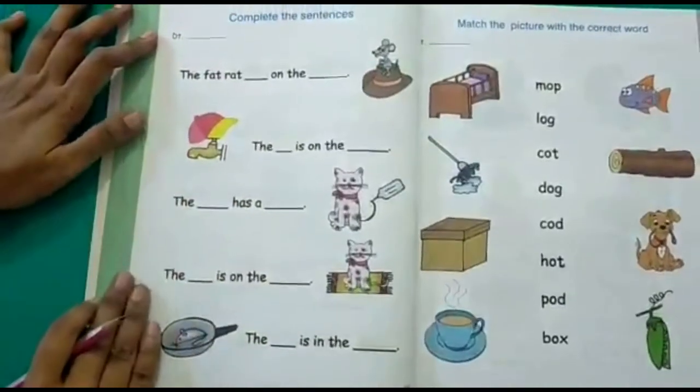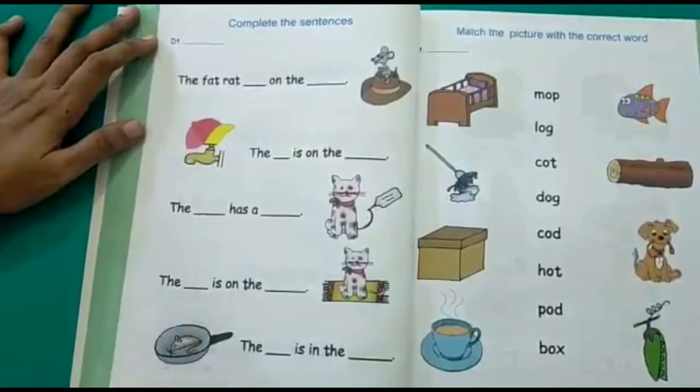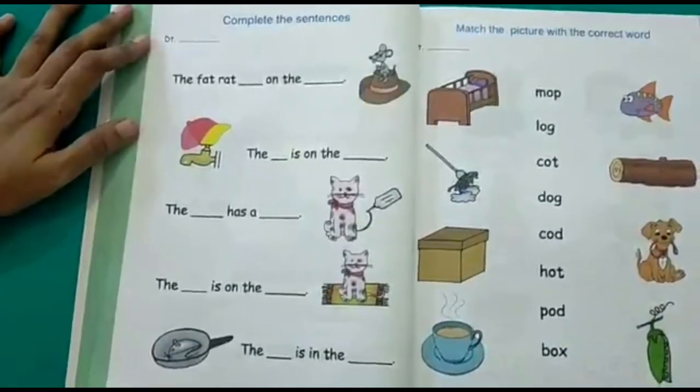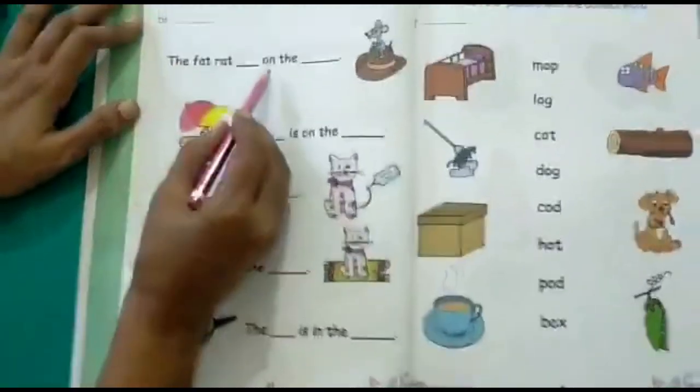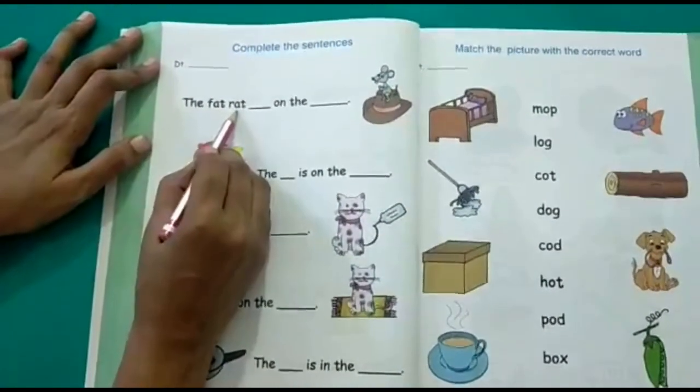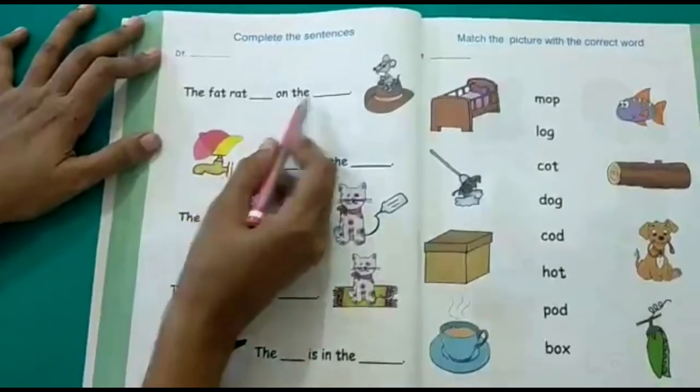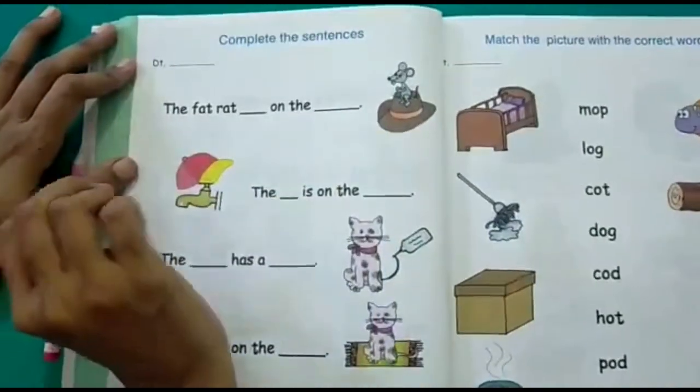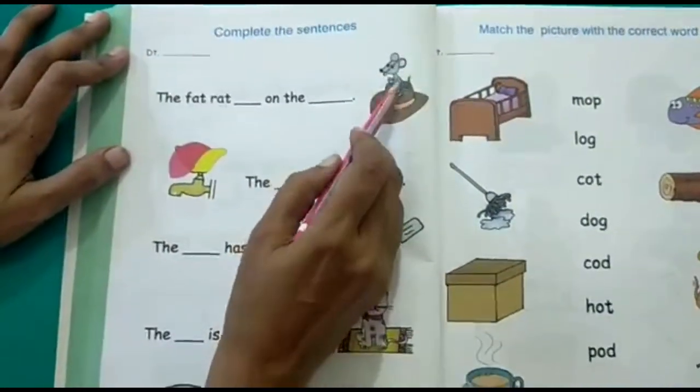So now we will complete the sentences on page number 24. Now let's see what is given here. The fat rat, there is a blank, on the, there is a blank again. So here what do we see?